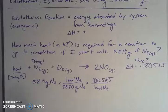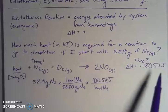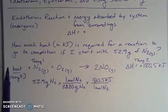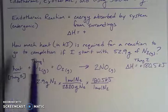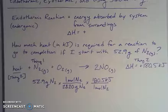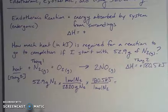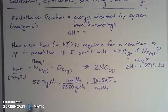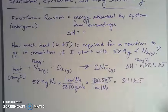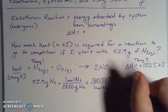For every one mole of nitrogen in this balanced chemical equation, it's a one-to-one ratio of heat to nitrogen. When I plug this in and look at three significant figures, I end up with 341 kilojoules required.